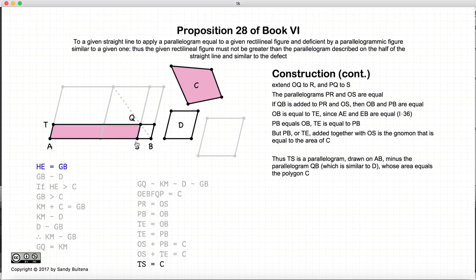So there, thus we have drawn a parallelogram on AB. We have removed a parallelogram that is similar to D. And the resulting parallelogram is equal in area to C, which is what we were setting up to achieve.